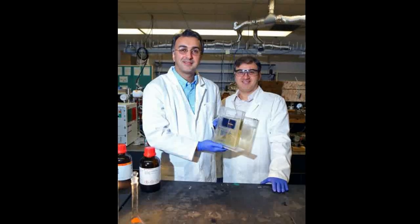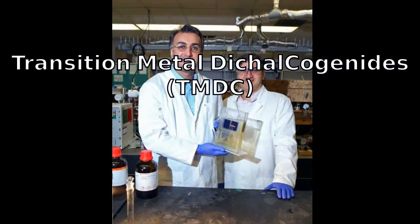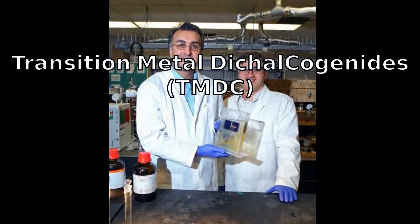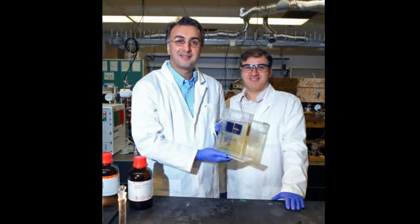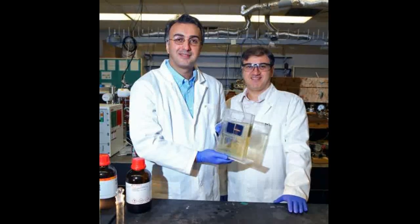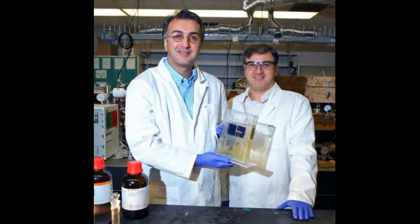The researchers focused on a family of nanostructured compounds called transition-metal-dichalcogenides, or TMDCs, as catalysts, pairing them with an unconventional ionic liquid as the electrolyte inside a two-compartment, three-electrode electrochemical cell.